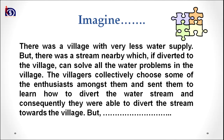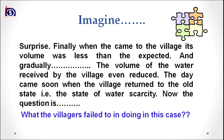Now it's story time. Imagine there was a village with very little water supply, but there was a stream nearby which, if diverted to the village, could solve all the water problems. The villagers collectively chose some enthusiasts among them and sent them to learn how to divert the water stream. They were able to divert it, but when the water finally came to the village, its volume was less than expected, and gradually the volume received by the village reduced further.